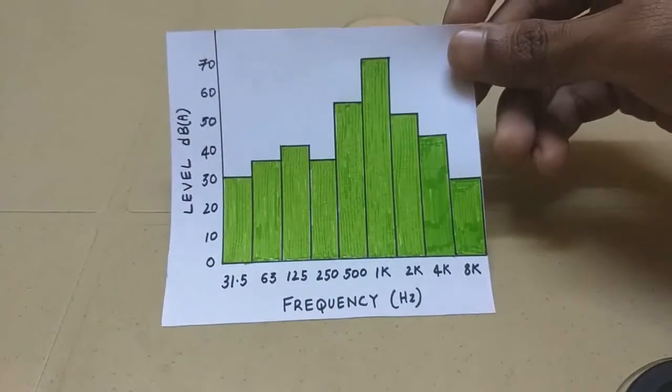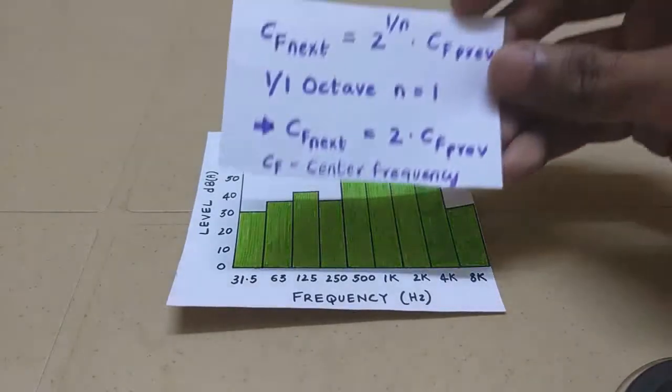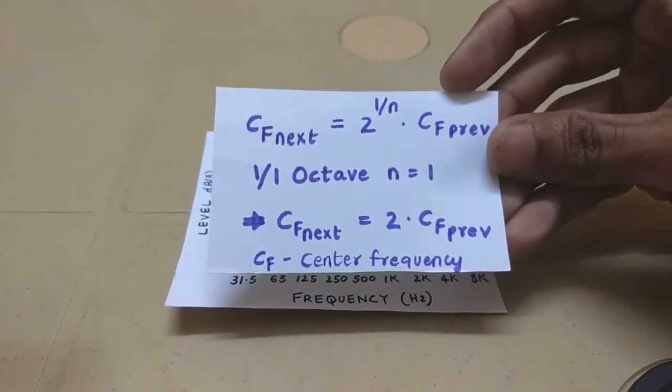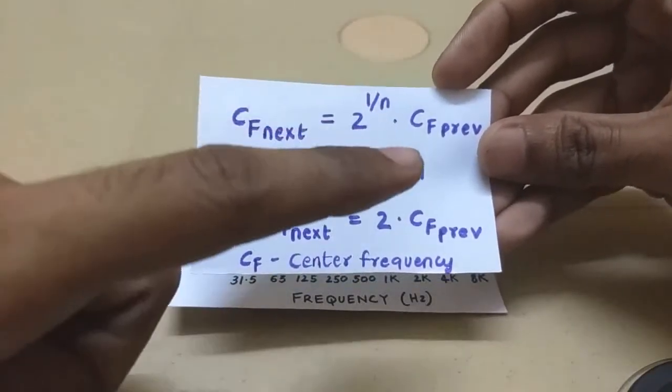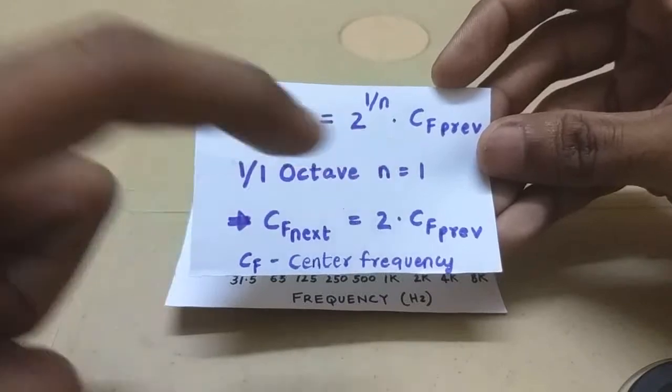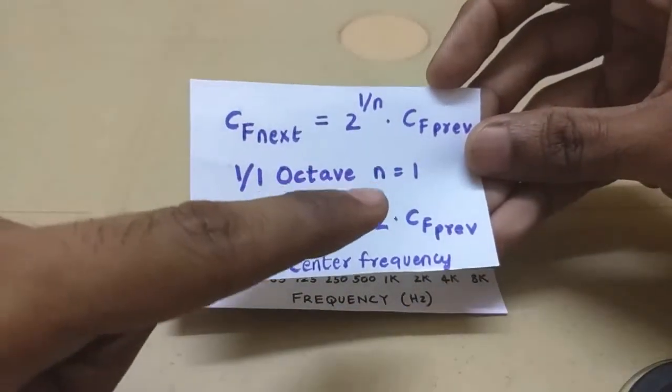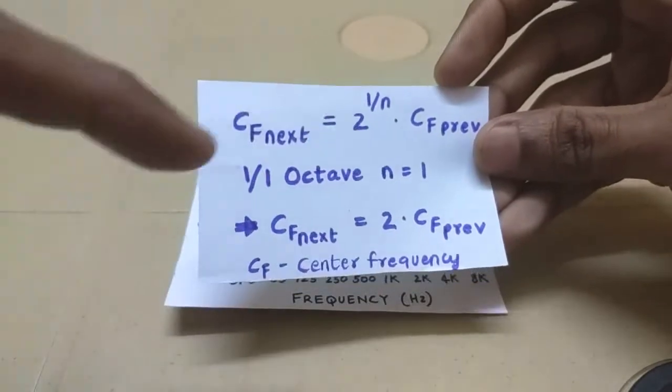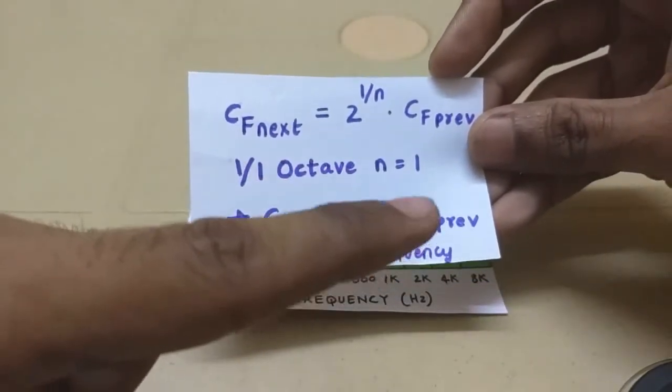Well there is a mathematical relation for that. So this is how it looks. The center frequency or the next center frequency is 2 power 1 by n times previous center frequency. Now we know this is a 1 by 1 octave band which means n equals 1. So plug that n equals 1 here and you get center frequency next is twice center frequency previous.